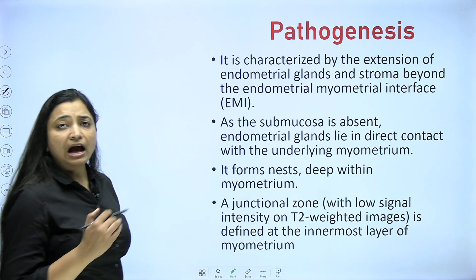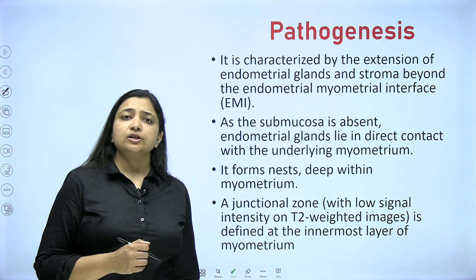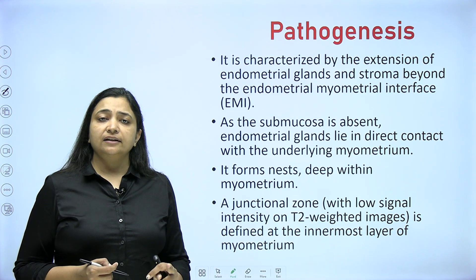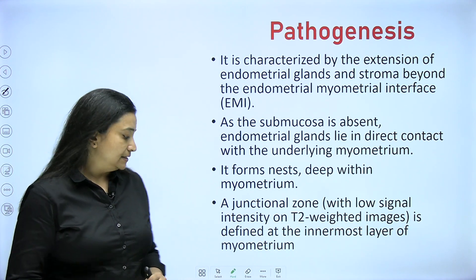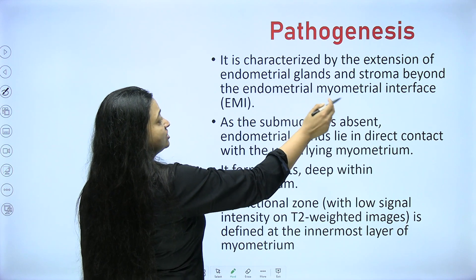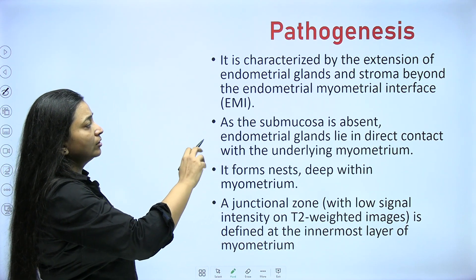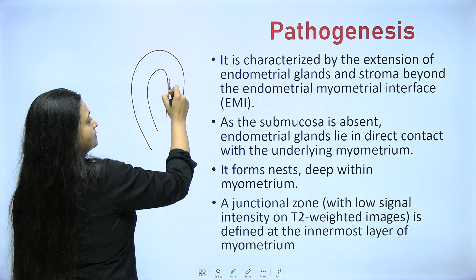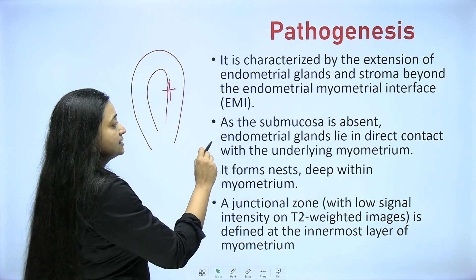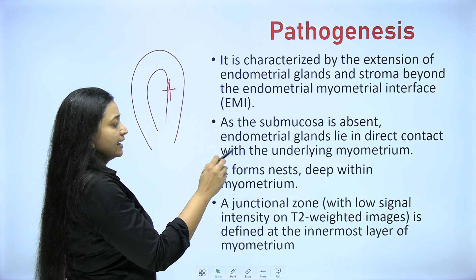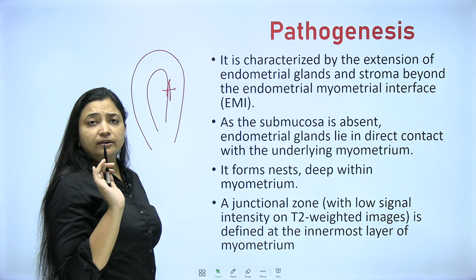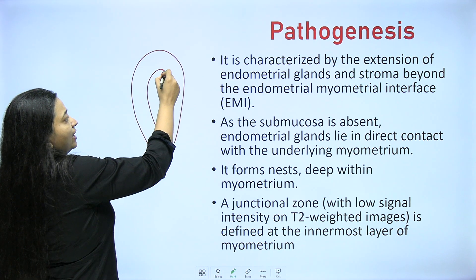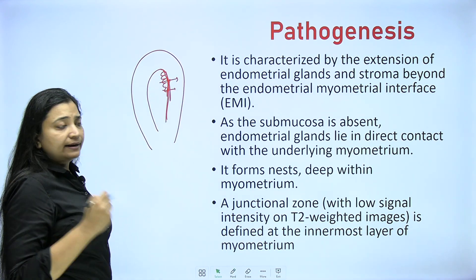Now, pathogenesis — how does it happen? Adenomyosis is characterized by the extension of endometrial glands and stroma beyond the EMI, that is the endometrial-myometrial interface. The endometrium goes inside. As the submucosa is absent, endometrial glands lie in direct contact with the underlying myometrium. These basal cells are directly over the myometrium, so if any breach occurs, it can easily get inside and get embedded.